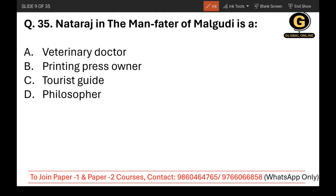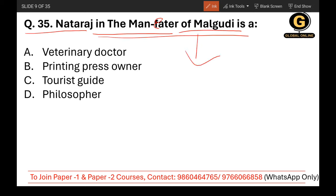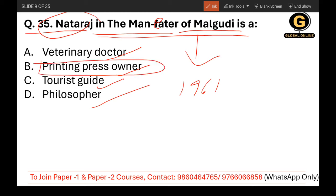Question 35: Nataraj in the Man-Eater of Malgudi — who was he? This is a work by R.K. Narayan published in 1961. The options are veterinary doctor, printing press owner, tourist guide, or philosopher. Nataraj was a printing press owner. The correct answer is B.